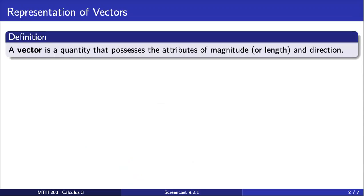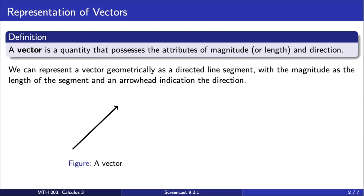A vector is a quantity that possesses the attributes of magnitude, or length, and direction. We can represent a vector geometrically as a directed line segment, with the magnitude as the length of the segment and an arrowhead indicating the direction.